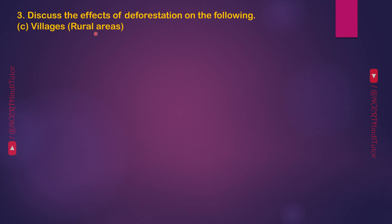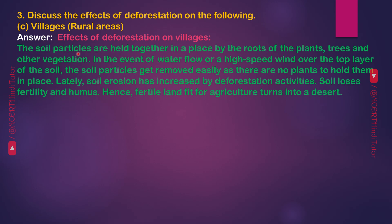Effects of deforestation on villages and rural areas: The soil particles are held together by the roots of plants, trees and other vegetation. In the event of water flow or high-speed wind over the top layer of soil, the soil particles get removed easily as there are no plants to hold them in place. Soil erosion has increased because of deforestation activities. Soil loses fertility and humus, and hence fertile land fit for agriculture turns into a desert.